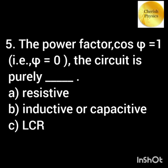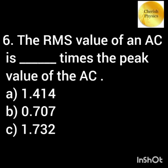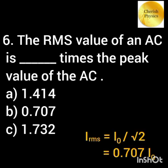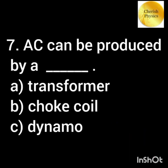The power factor cos phi equal to 1 — then the circuit is purely — dash. The RMS value of an AC is dash times the peak value of the AC. Alternating current can be produced by — dash.